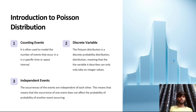Understanding the Poisson distribution: it is often used to model the number of events that occur in a specific time interval. The Poisson distribution is a discrete probability distribution, meaning that the variable it describes can only take integer values.